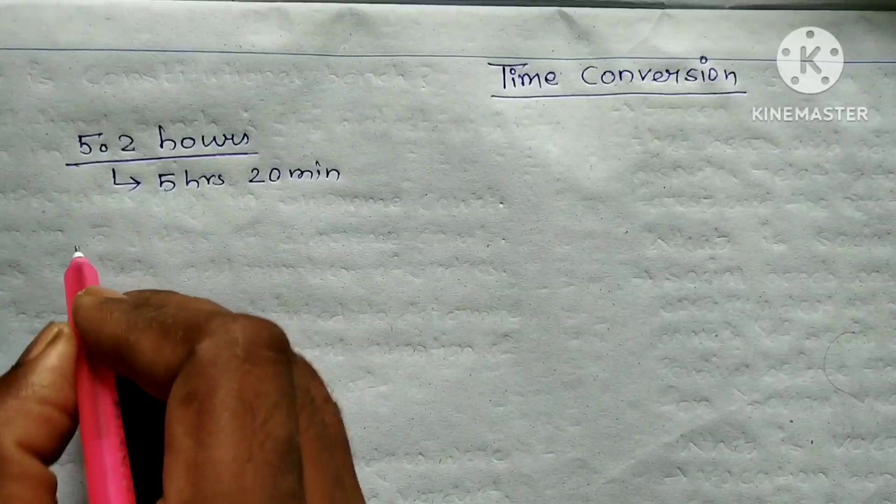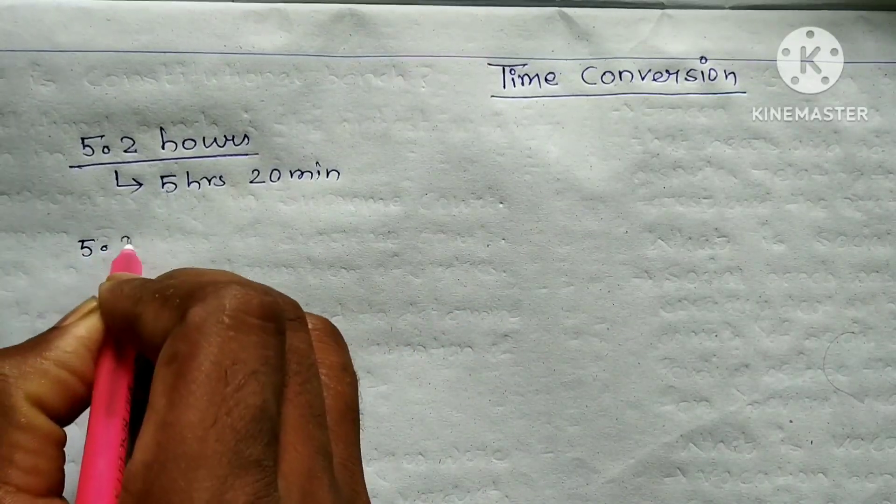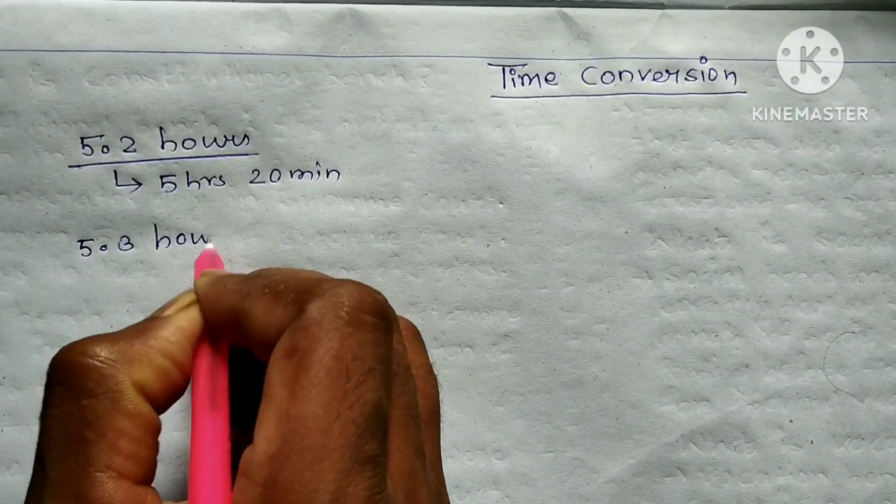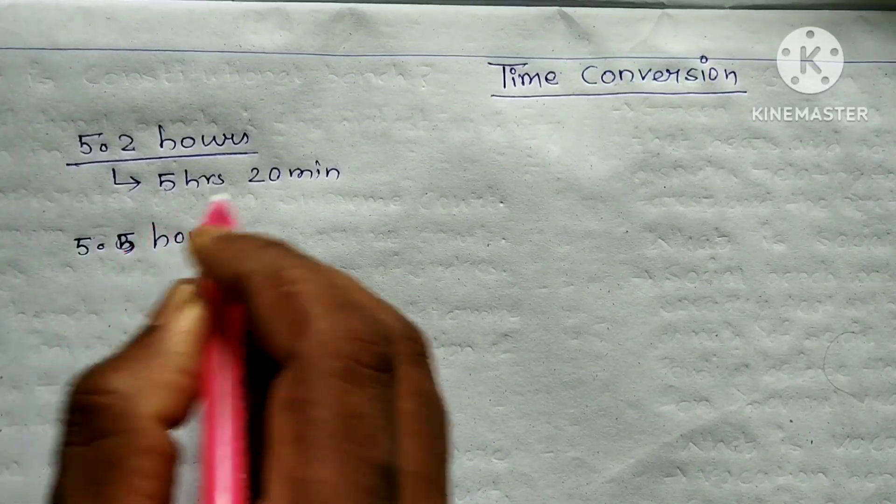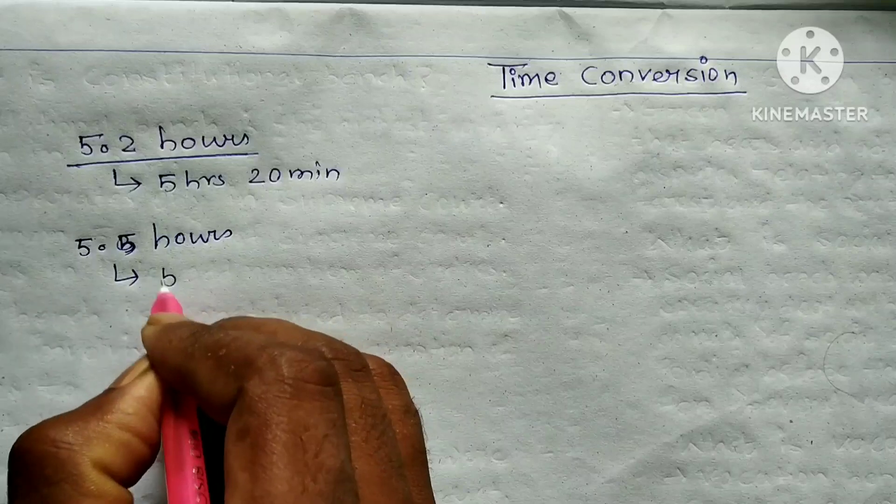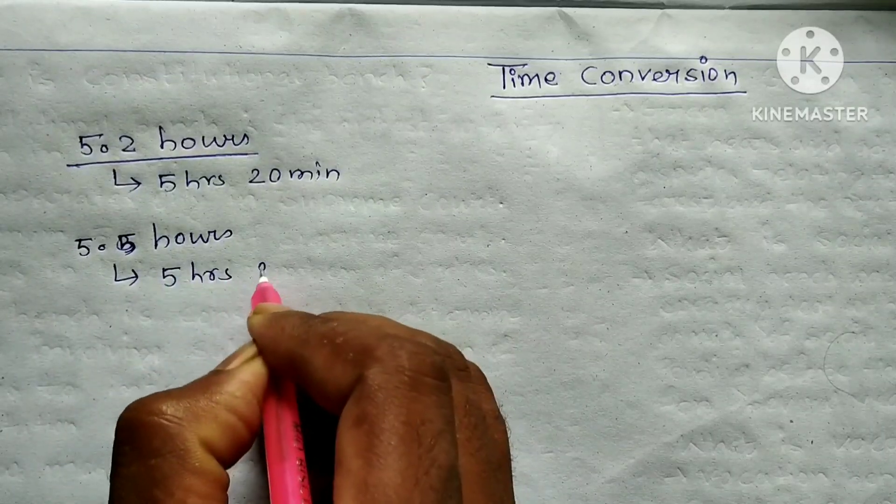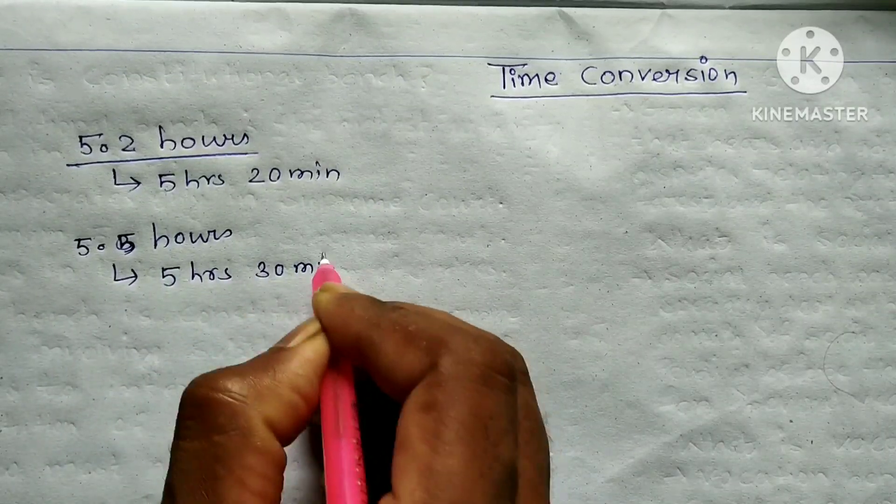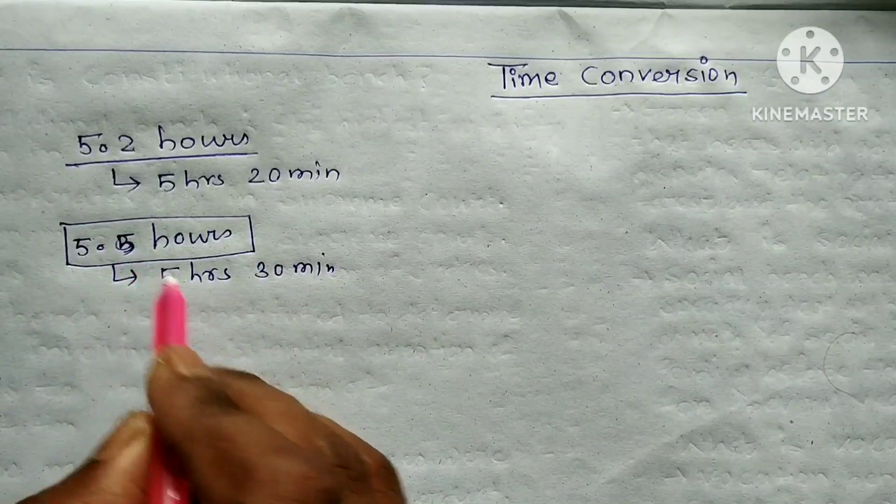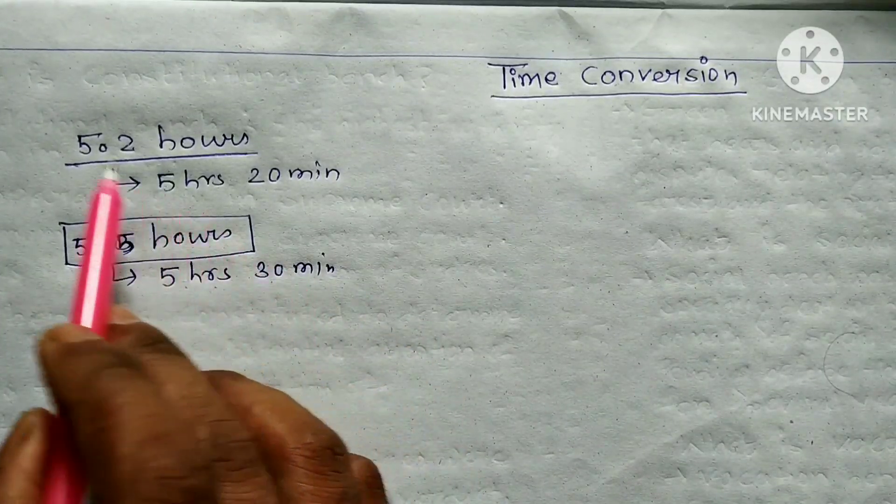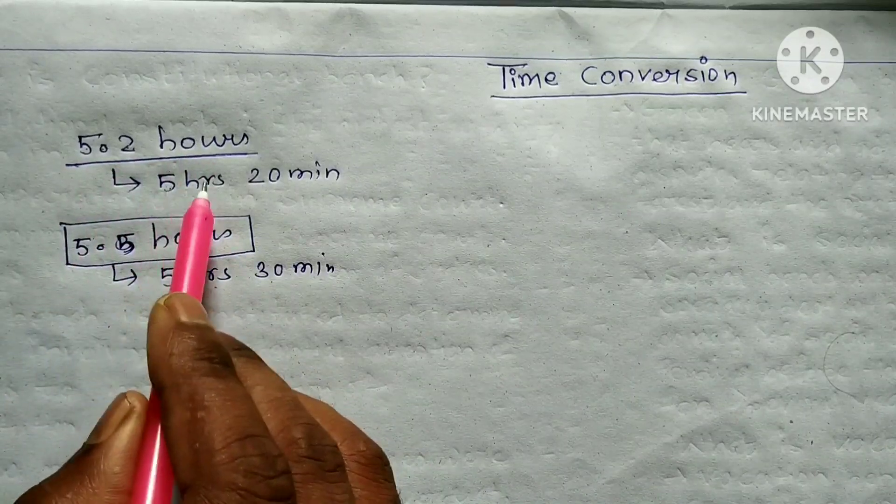5.3 hours, 5.5 hours - that's 5 hours, 30 minutes. 5.5 hours equals 5 hours, 30 minutes.